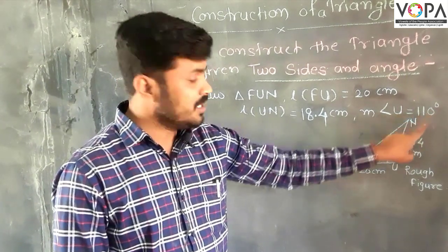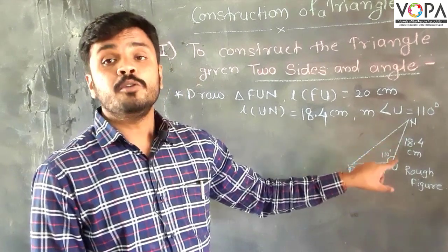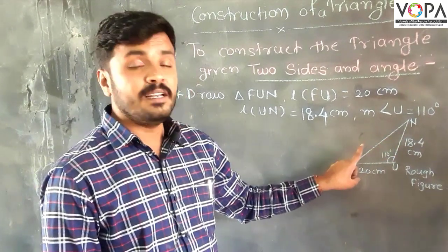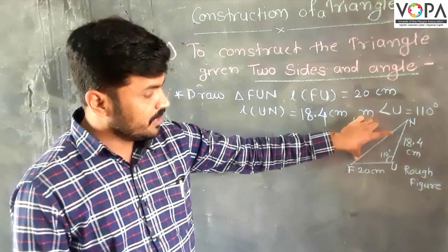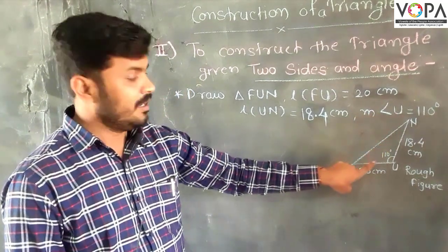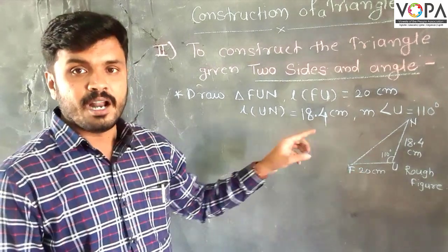The angle U is equal to 110 degrees, which means the angle is an obtuse angle. So this triangle is an obtuse angle triangle. As you see in this figure, this is the obtuse angle triangle, and this is the rough figure.